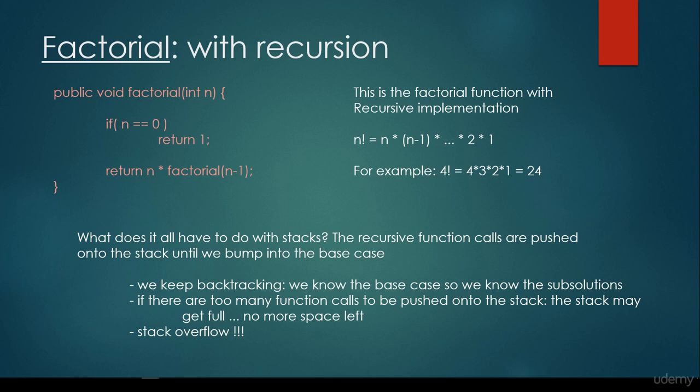It's very important to implement this factorial function with the help of recursion. For recursive algorithms, we have to have a base case. If n is equal to 0, we return 1 — this is the base case. The factorial of 0 is equal to 1. Otherwise, we return n times the factorial of n−1, and that is the implementation for the factorial.